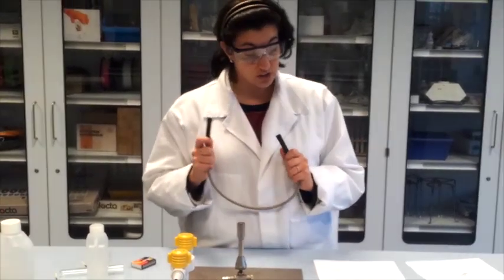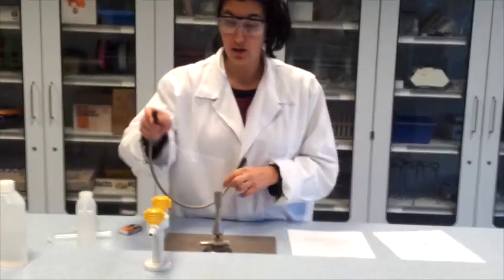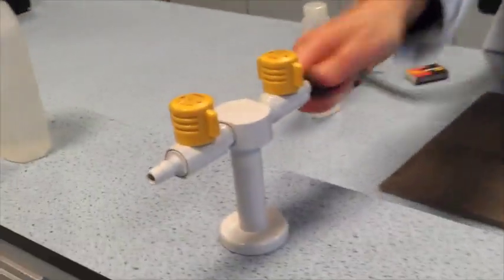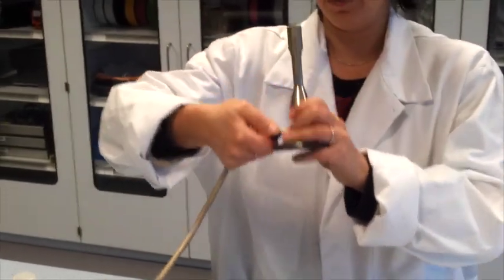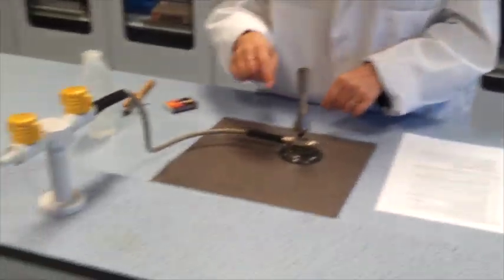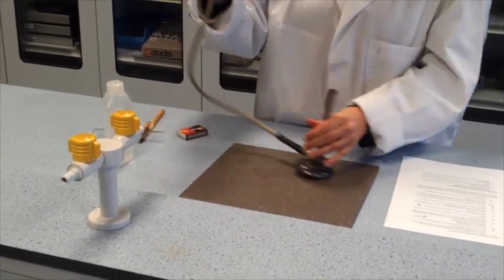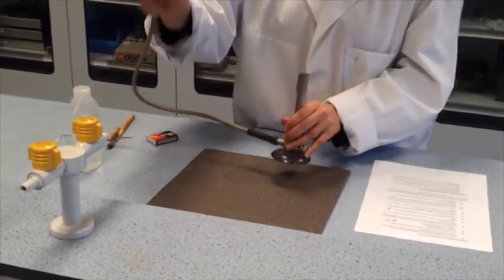Then we are going to attach the rubber tubing firmly to the main gas supply by a turning motion and to the Bunsen burner. I do the main supply first because otherwise I can pull around the Bunsen burner and it might fall on the floor.